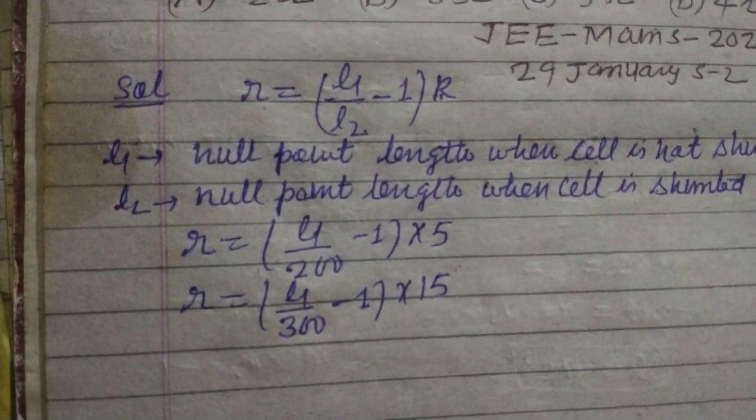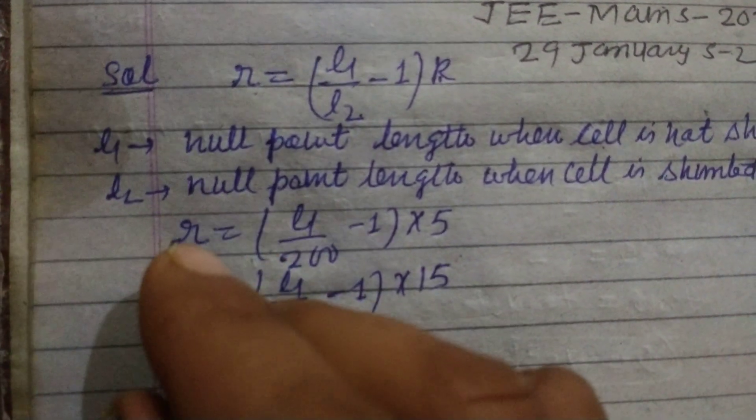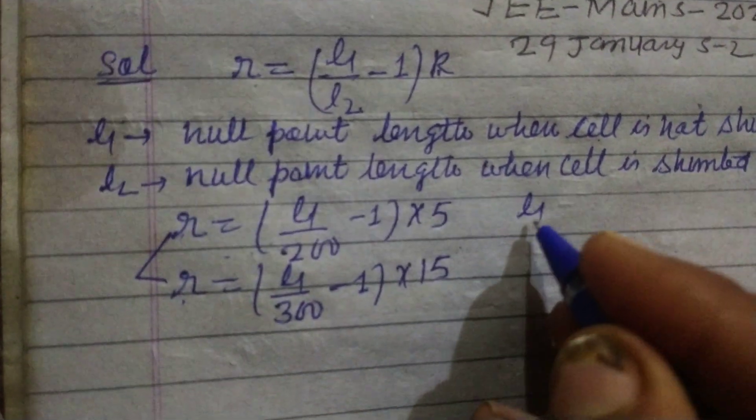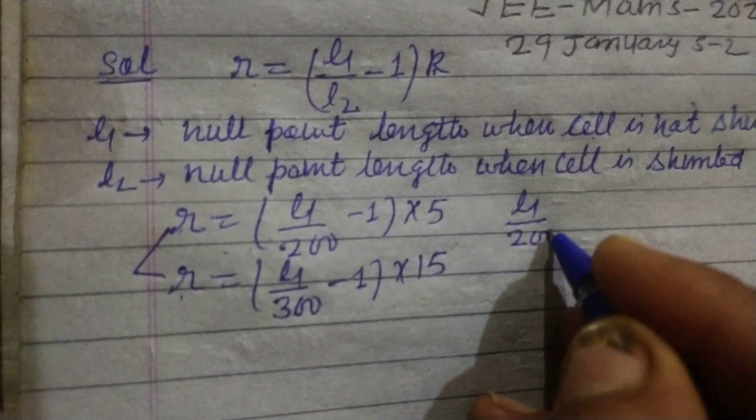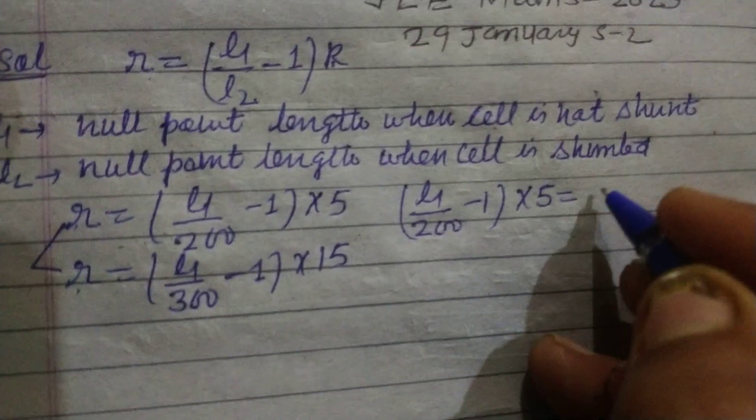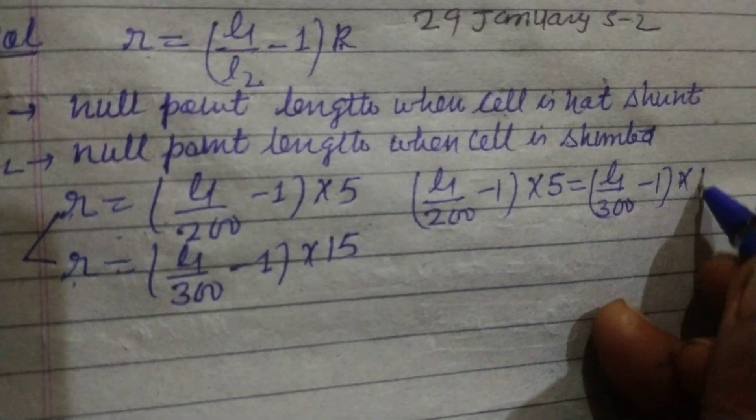Now, setting them equal to each other: (L1/200 - 1) × 5 = (L1/300 - 1) × 15. So 5 times 3 is 15.